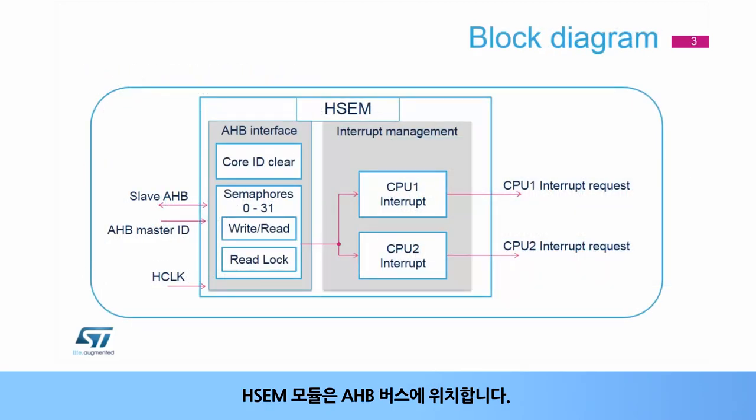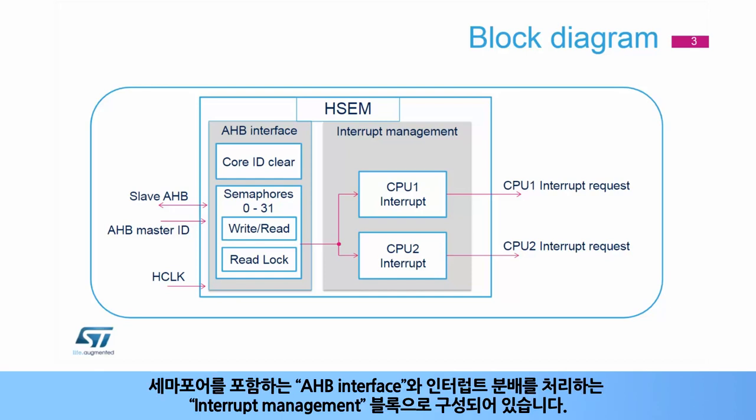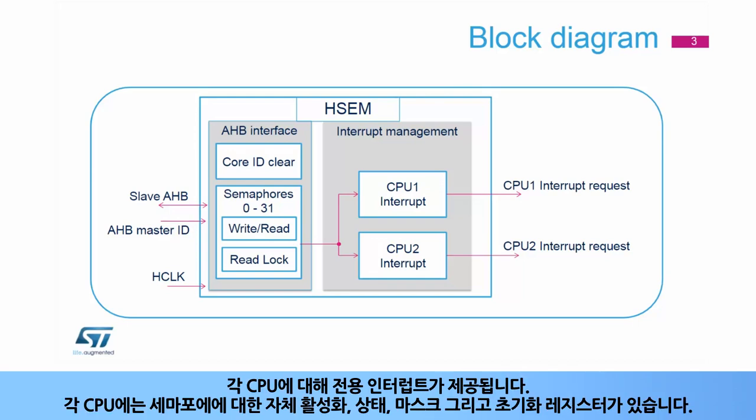The HSEM module is located on the AHB bus. It consists of an AHB interface containing the semaphores and an interrupt management block handling the interrupt distribution. A dedicated interrupt is provided for each CPU. Each CPU has its own enable, status, mask, and clear register for the semaphores.